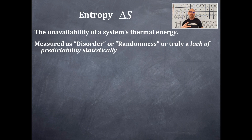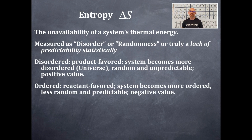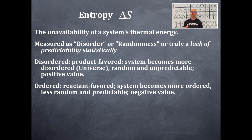Let's cover two key terms and figure out which side they are on. If it is disordered, then it is product favored — the system becomes more disordered, just like the universe. It is random and unpredictable, and it's a positive value. If it is ordered, then it is reactant favored — the system becomes more ordered, it's less random, it's more predictable, and it's a negative value. Let's tie in some pictures to what this means, to key you into randomness, disorder, and order.